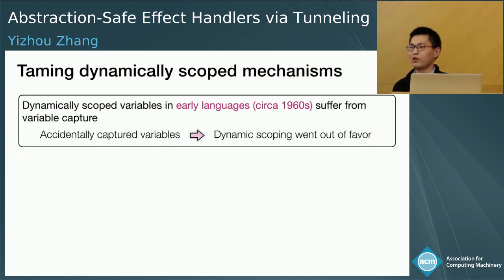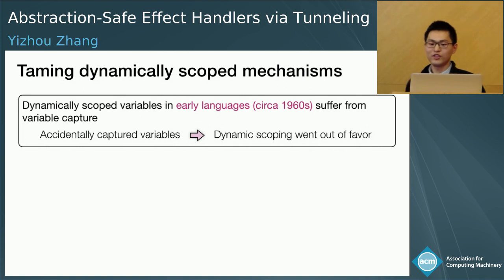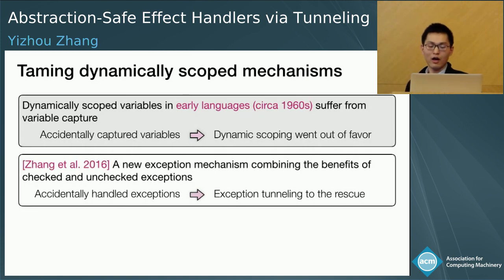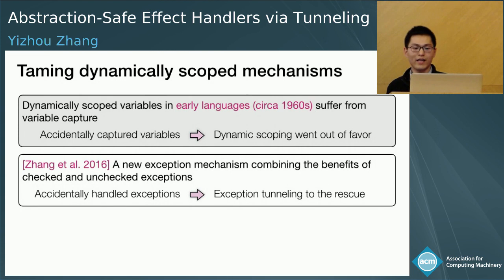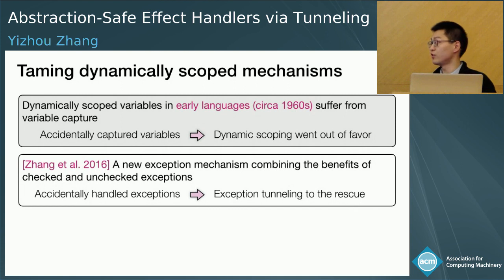Dynamic scoping is known to have modularity problems. Early languages such as Lisp supported dynamically scoped variables, but dynamic scoping has largely gone out of favor because of the variable capture problem, which can be viewed as an instance of the more general problem of accidentally handled effects. Tunneling offers the power of dynamic scoping in some sense, but without breaking abstraction. Our prior work on the design and implementation of an exception mechanism identified the problem of accidentally handled exceptions and used exception tunneling to address it.